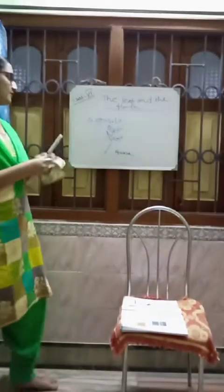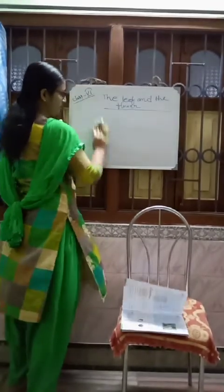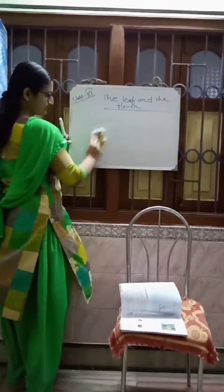So there are three types of leaf arrangement: opposite, alternate, and whorled.